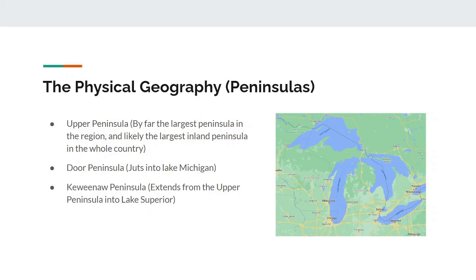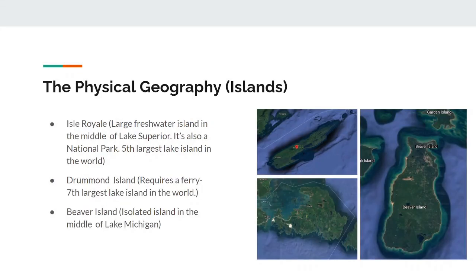Other peninsulas in this region include the Door Peninsula, which juts out into Lake Michigan, and the Keweenaw Peninsula, which is a peninsula on the Upper Peninsula and extends into Lake Superior. The three most important islands of the region are also in the Great Lakes. Isle Royale is probably the most famous since it's a national park and ridiculously hard to get to — it's the fifth largest lake island in the world. Two other islands of lesser importance include Drummond Island and Beaver Island; both are pretty remote and traveling to them is usually done by ferry.